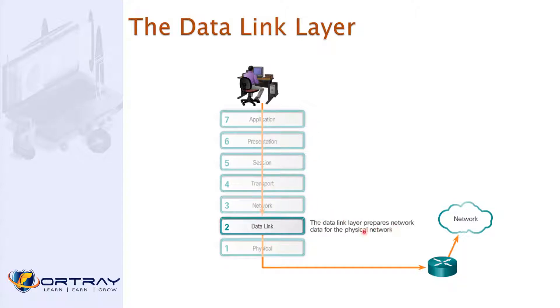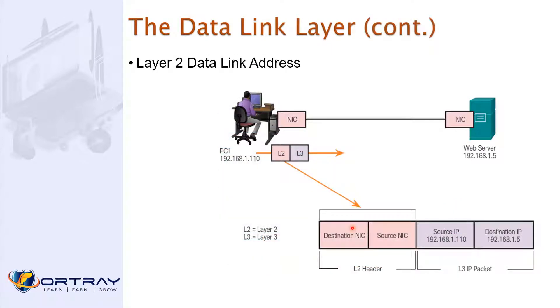The data link layer prepares the network data for the physical network. Before it is reaching to the physical network, it is going to prepare that information. So how the physical network is going to receive that information. Now what we are going to do, let's deal with data link access.